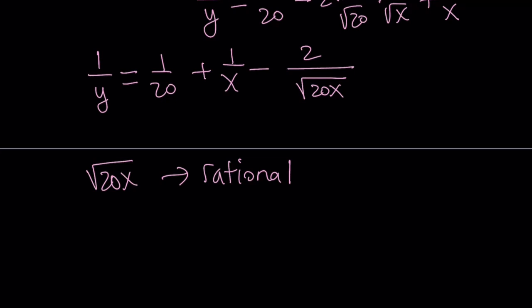In order for that to happen, what's inside the radical needs to be a perfect square. So 20x needs to be something like n squared, where n is an integer. Think about the prime factorization of 20. It has 4 and 5, 2 squared. So 4 is already a square and 5 is not.